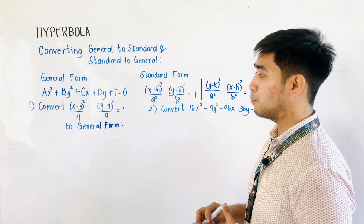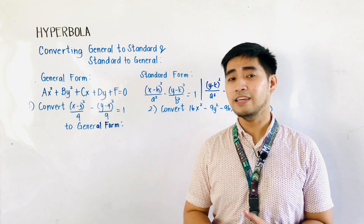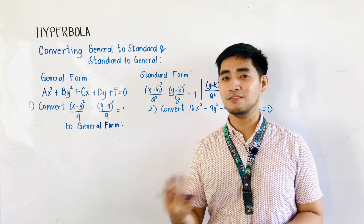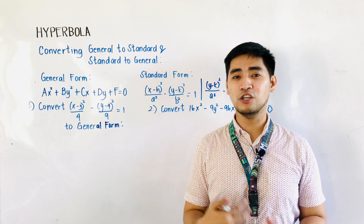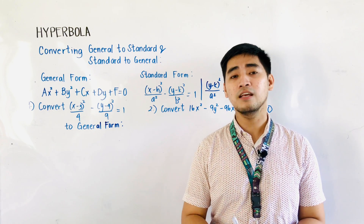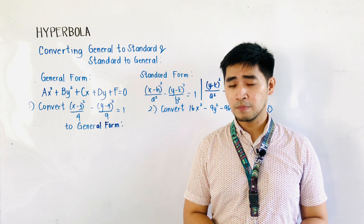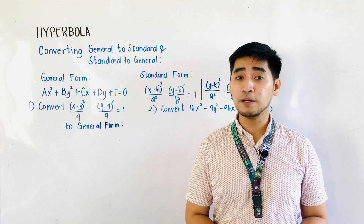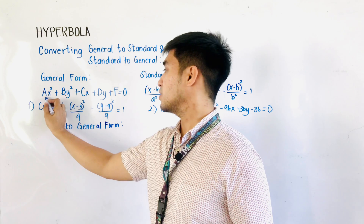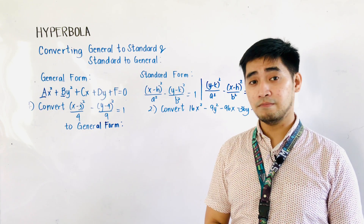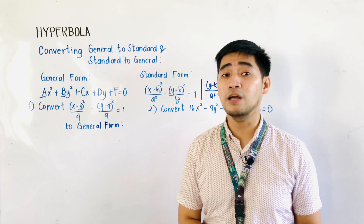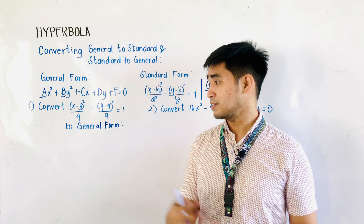For the general form of the hyperbola, we are given an equation ax² + by² + cx + dy + f = 0. Always remember that general forms of the equations of conic sections have their right side equal to zero. And for the hyperbola, the coefficients a and b should not be equal to zero, since they correspond to x² and y² terms.